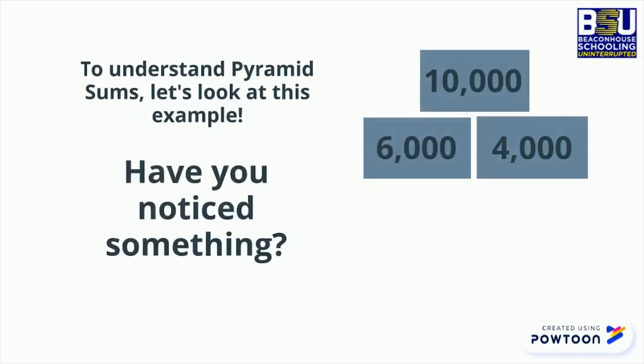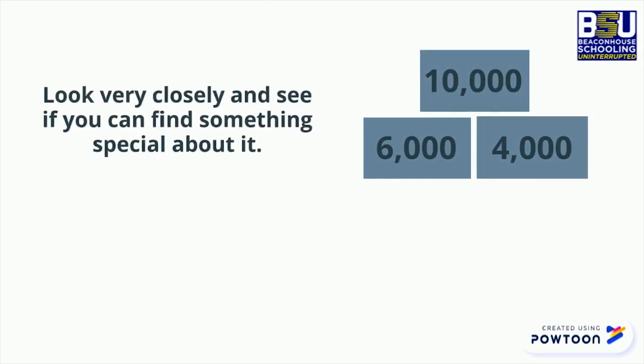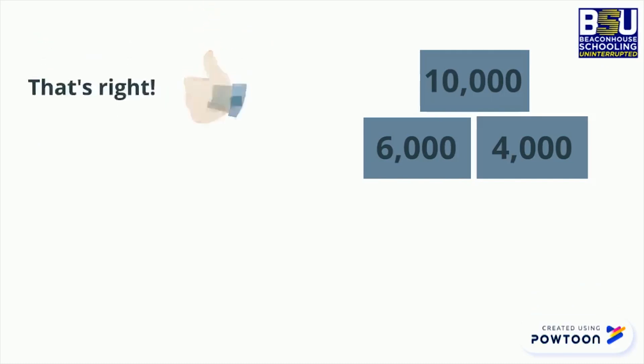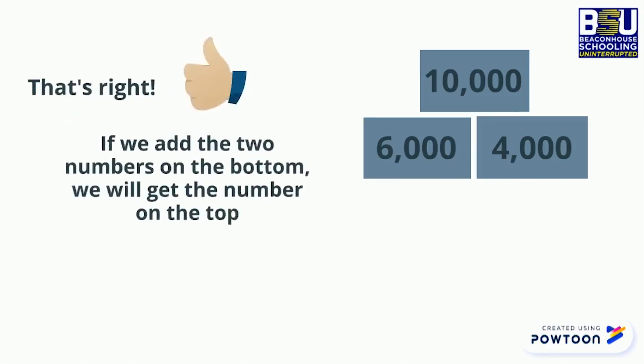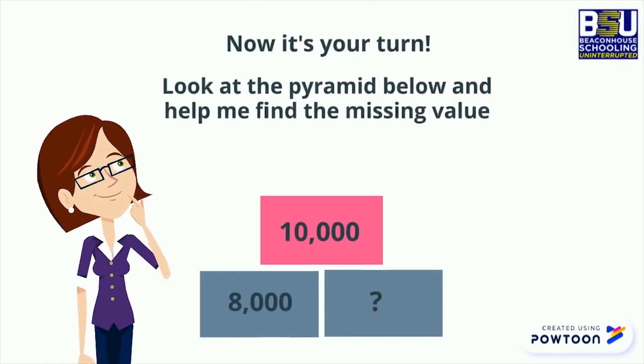Look very closely and see if you can find something special about it. That's right, if we add the two numbers on the bottom we will get the number on the top. Now it's your turn. Look at the pyramid below and help me find the missing value.